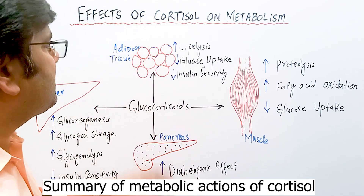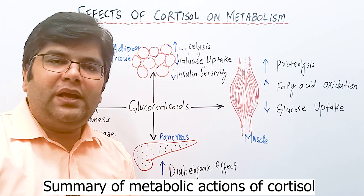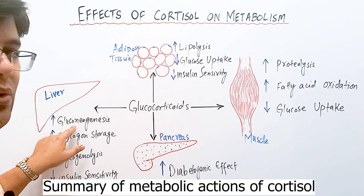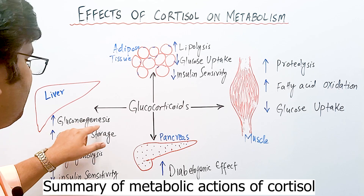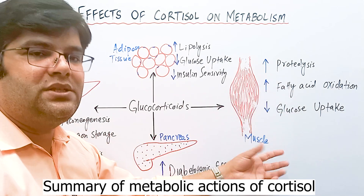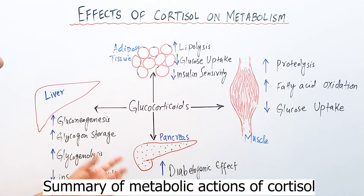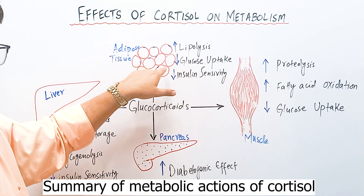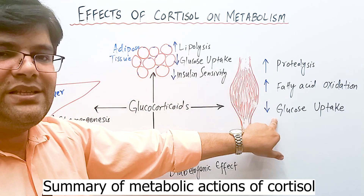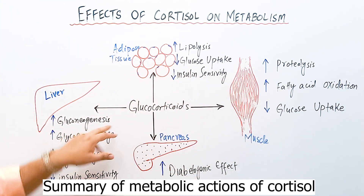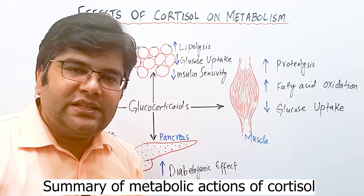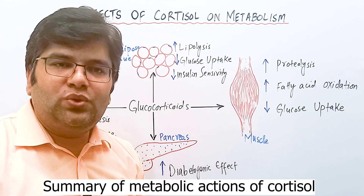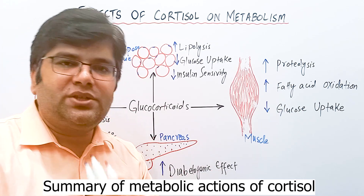To summarize the metabolic effects of cortisol: its main effect is to increase blood glucose level through gluconeogenesis, with raw materials coming from protein breakdown as amino acids, combined with decreased glucose uptake by muscles and adipose cells. Both effects raise blood glucose to spare glucose for the brain, which uses it as its only energy source.